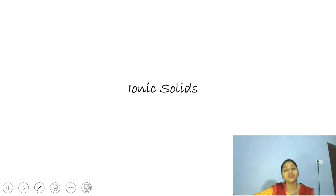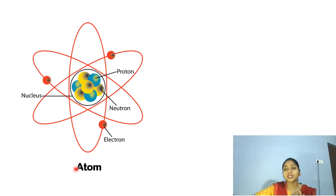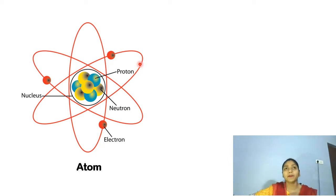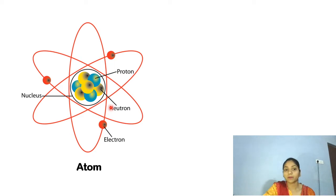To discuss about ionic solids, we should know certain basic terminologies that will help us understand this chapter well. The first point everyone should know is what are atoms. Atom is said to be the smallest particle, but that is not entirely accurate because it consists of electrons, neutrons and protons, which are the subatomic particles — they are even smaller than the atom. We can say that the basic constituent of any element is the atom. As you can see, the atom consists of the nucleus and orbits containing the electrons.